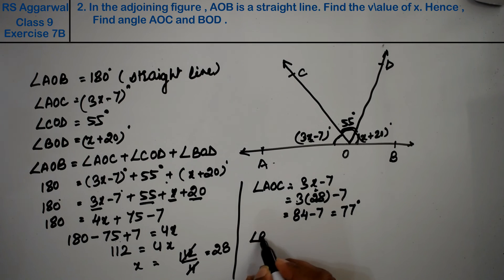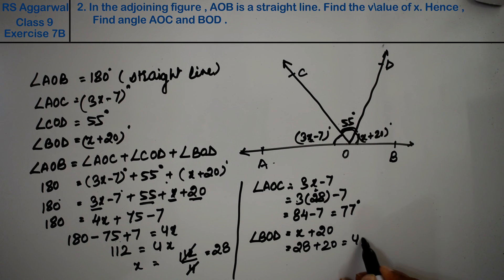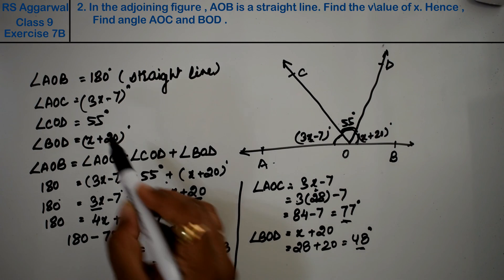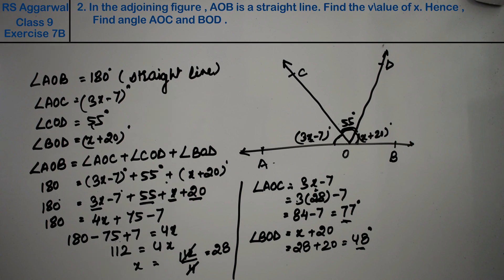Now BOD equals x plus 20. X was 28, so 28 plus 20 equals 48 degrees. You can verify by adding all three angles: 77 plus 55 plus 48 equals 180. This is the answer.